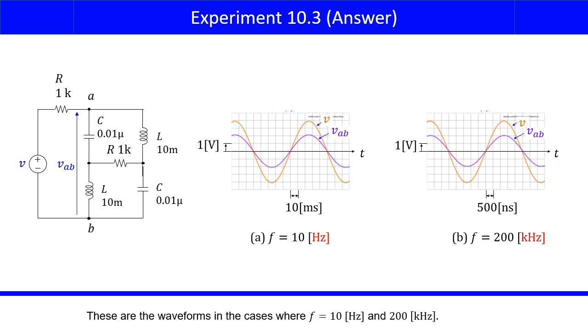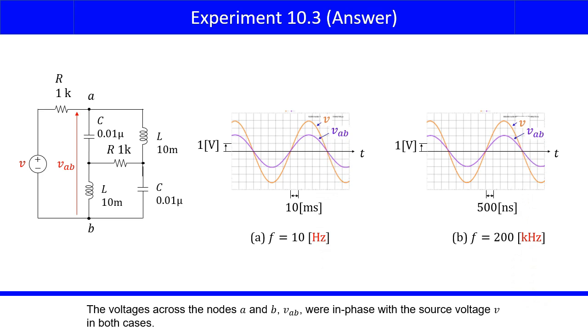These are the waveforms in the cases where F equals 10 Hz and 200 kHz. The voltages across the nodes A and B, VAB, were in phase with the source voltage V in both cases.